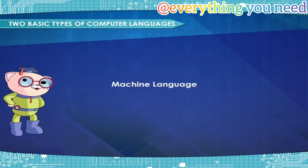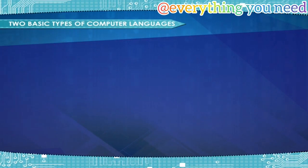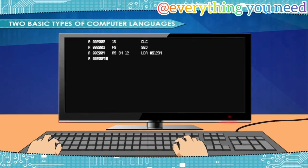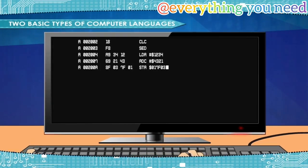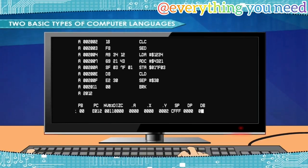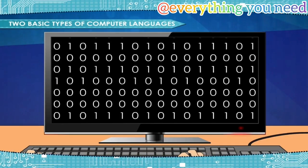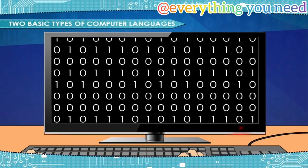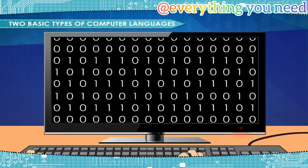Machine language is a language that is directly understood by the hardware. It is the lowest and most elementary level of programming language and was the first type of programming language to be developed. It uses binary digits 0 and 1 for giving instructions.